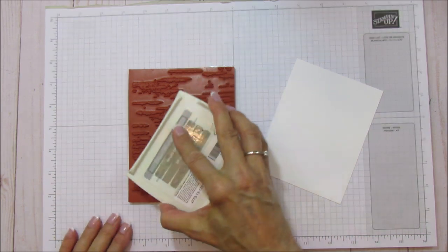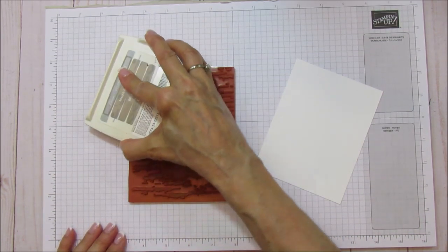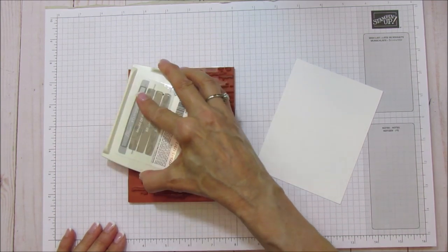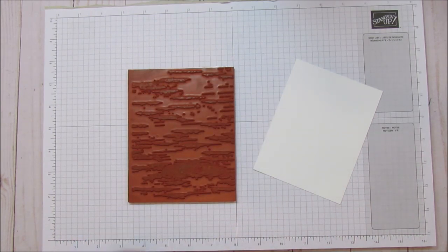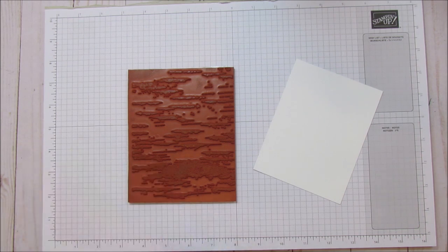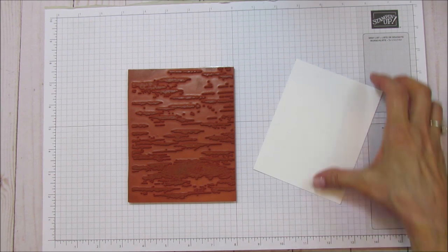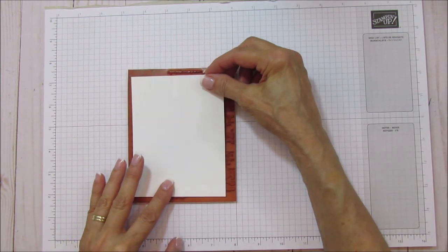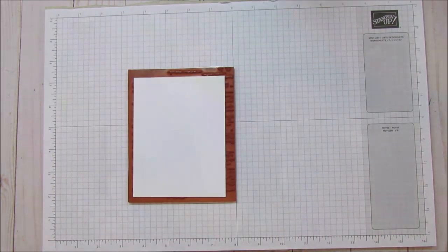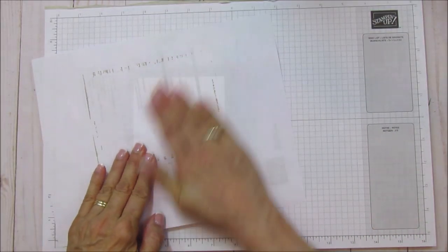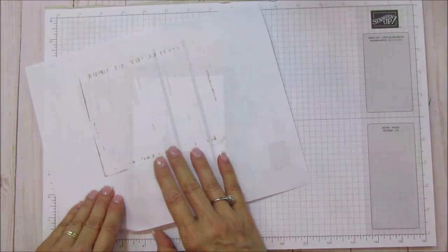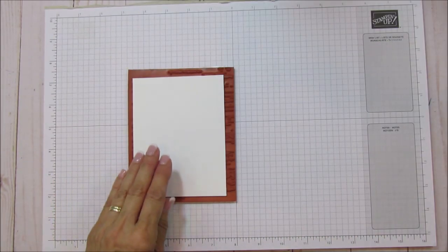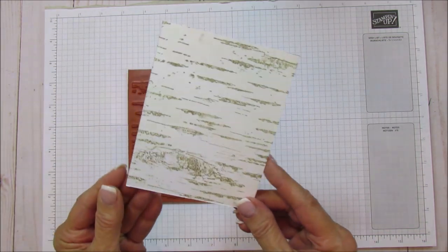We're just going to ink up the surface. There's a lot of stamp here so make sure everything is covered. Close this one up. I need to grab a little piece of scrap right here. I'm going to lay this on top and then we're going to just use this. It's just going to catch the ink that's on the edges.